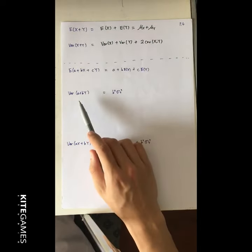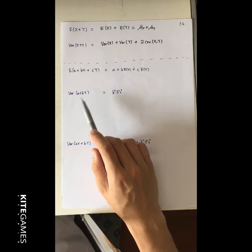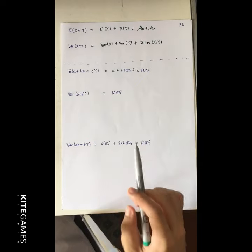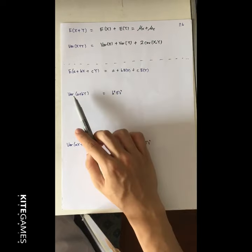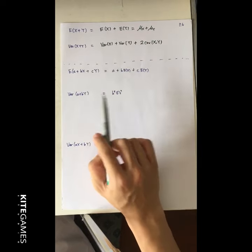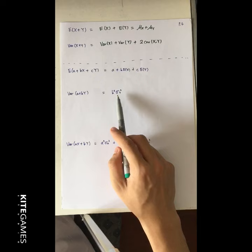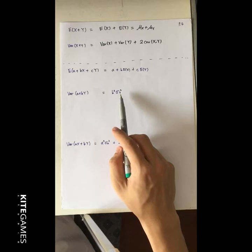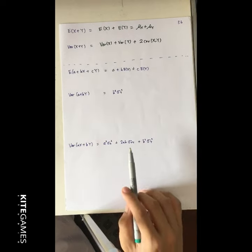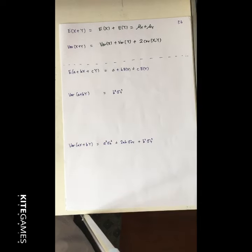Second, how about the variance of (a + by)? This equals b squared times the variance of y. I am now going to prove this.